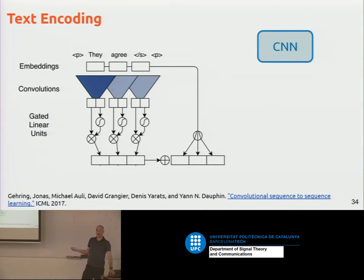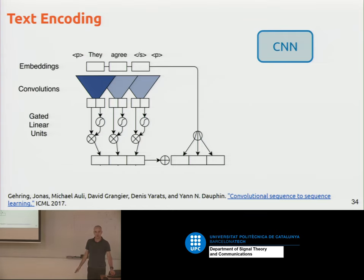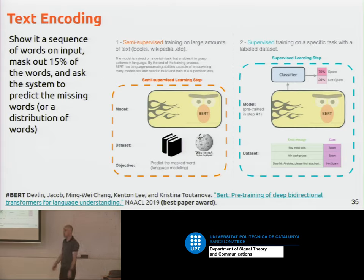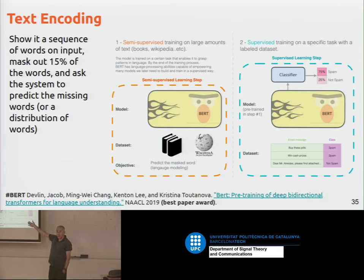You could also encode text with convolutional neural networks with an autoregressive approach — it's also possible, though the classic approach is recurrent. You can also encode text with transformer network architectures. Actually, one of the most popular word embeddings nowadays is called BERT. It follows the same approach: given words in a sequence, you mask around 15% of the words and ask the network to predict the missing words. This received a best paper award at the last natural language processing conference, NAACL.